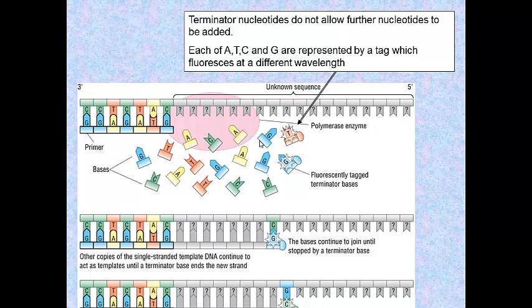So, strands will form along here until by chance they happen to integrate a terminal nucleotide. A terminator nucleotide. And at that point, replication ceases.